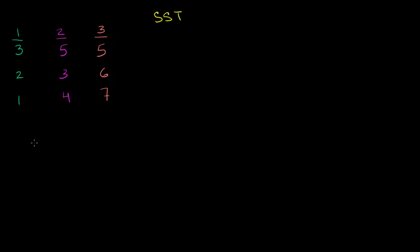You can view SST as the numerator when you calculate variance — you take the distance between each data point and the mean of all data points, square them, and take that sum. We're not going to divide by the degrees of freedom, which you would normally do for sample variance. First, we need to figure out the mean of all of this data, which I'm going to call the grand mean. I'll show you in a second that it's the same thing as the mean of the means of each dataset. So let's calculate the grand mean.